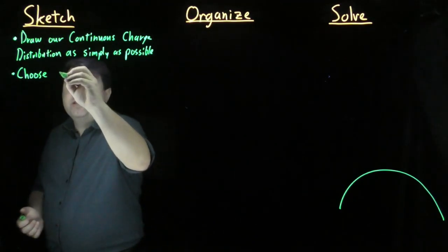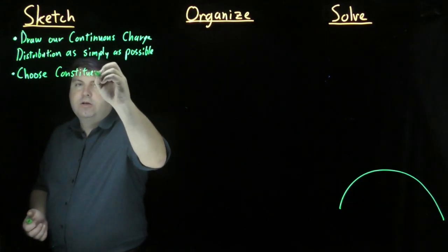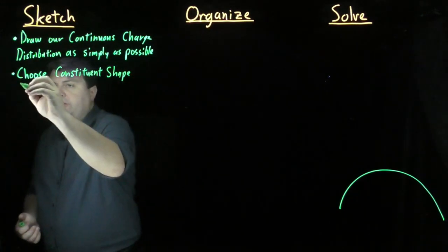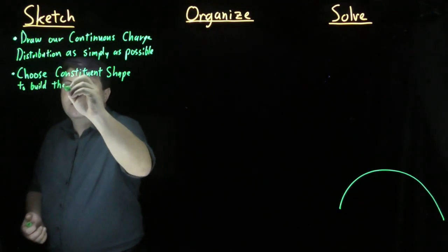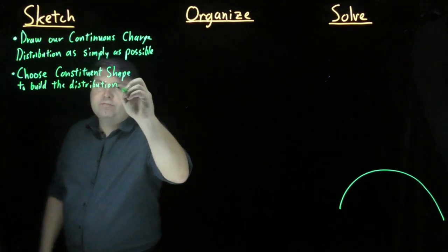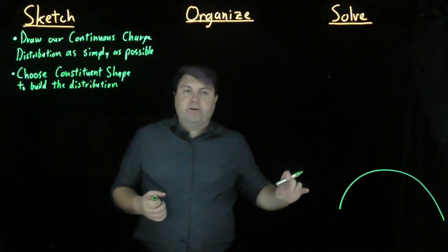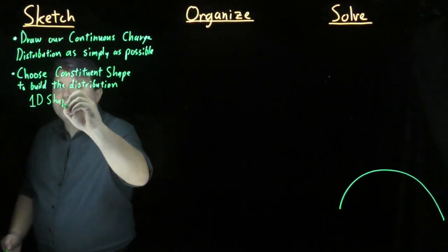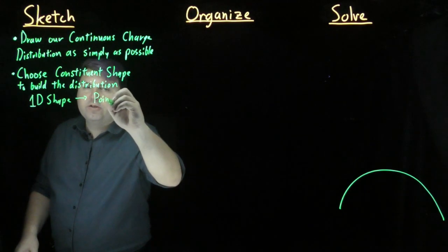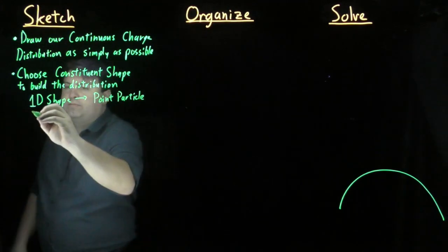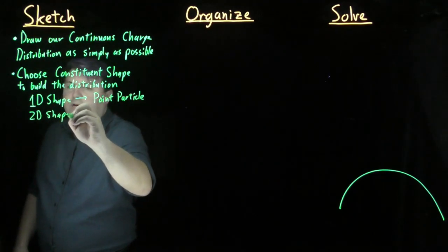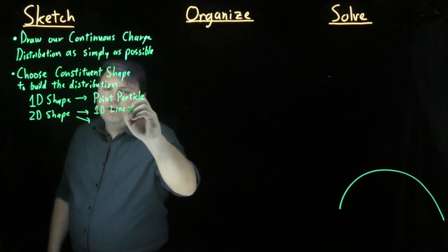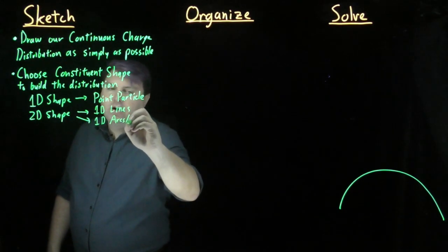The smaller pieces we are going to call constituent shapes because they constitute the thing that we are building. We're going to choose the constituent shape to build the distribution, and these constituent shapes are going to have one less dimension than our charge distribution. If we have a one-dimensional shape, this is going to be a zero-dimensional shape, which is a point particle. If we have a two-dimensional shape, then we are going to build them either out of one-dimensional lines or one-dimensional arcs or rings.